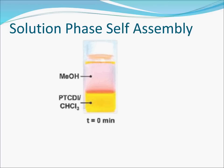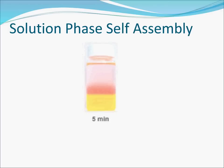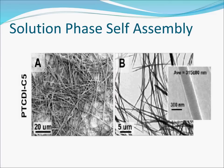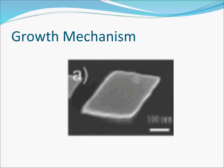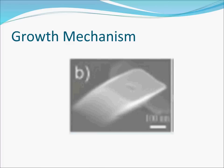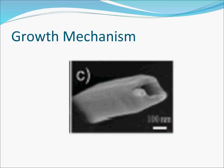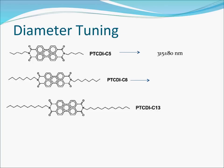Solution phase self-assembly is much simpler than gas phase self-assembly. In this process, two solvents are mixed and the pi-pi interactions at the interface of these two solvents are exploited to form nanostructures as shown here. The growth mechanism was studied by observing a PTCDI nanobelt at different time intervals during its synthesis. It was seen that the growth starts from a PTCDI nanoparticle and the structure then grows upwards. The diameter of nanowires can be tuned in the solution phase self-assembly by changing the carbon side-chain length. Similar tuning can be done in the gas phase process by changing the substrate temperature.